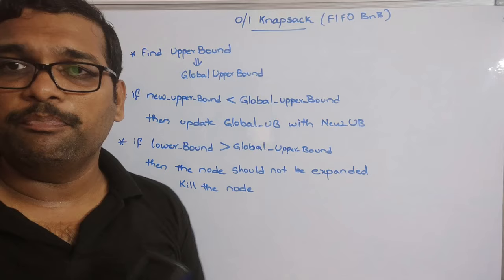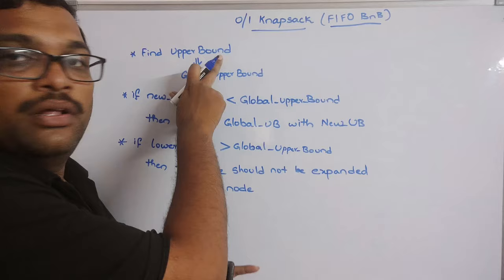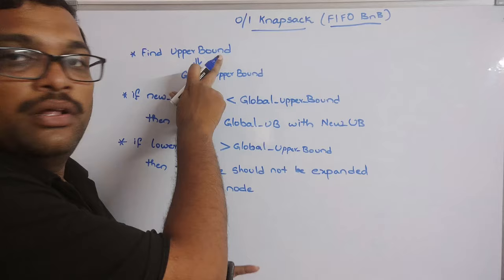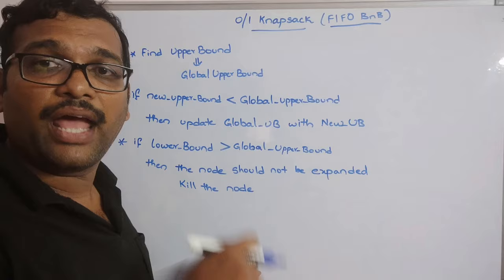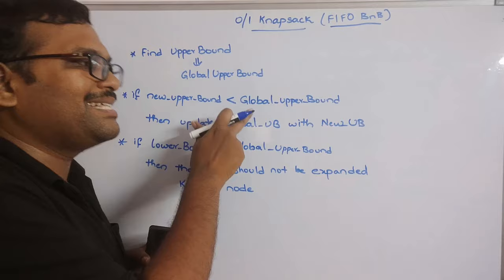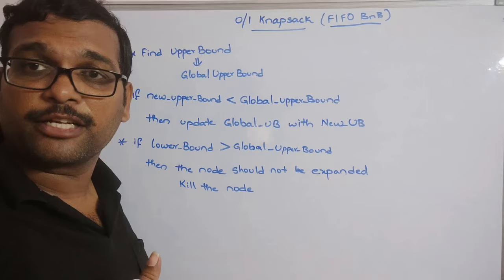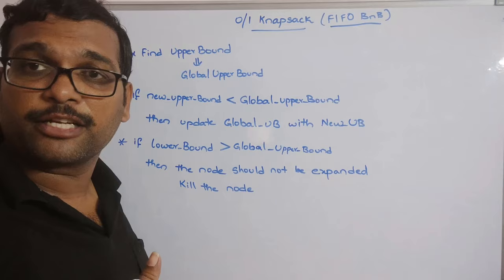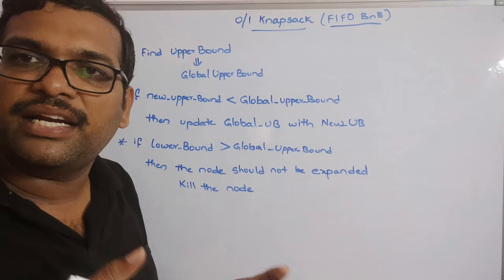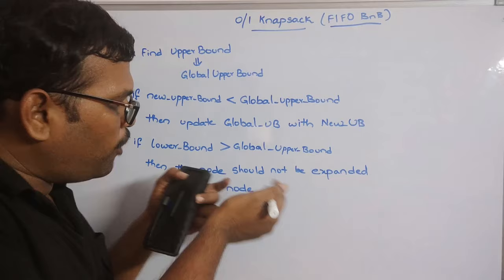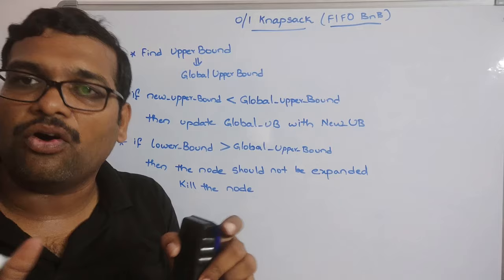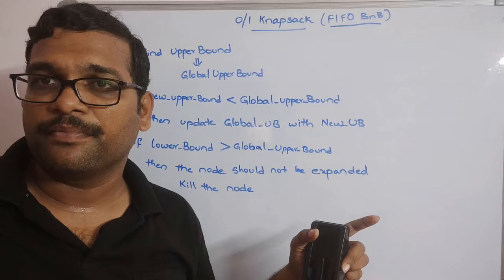These are the two most important conditions when solving the zero-one knapsack problem using FIFO branch and bound. Initially find the upper bound and initialize it as the global upper bound. For each node calculate the lower and upper bounds. If the new upper bound is less than the global upper bound, update it. If the lower bound is greater than the global upper bound, kill that node - it cannot be expanded. This way we are not expanding every node of the state space tree.